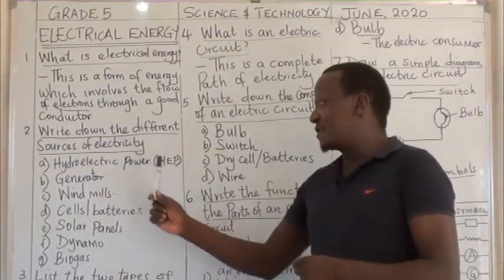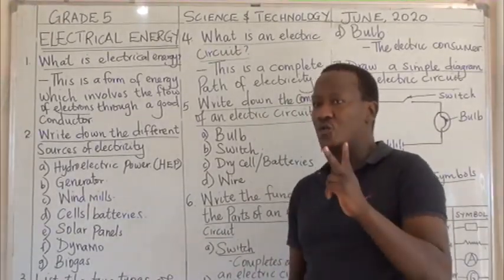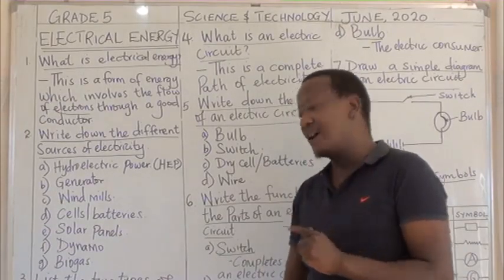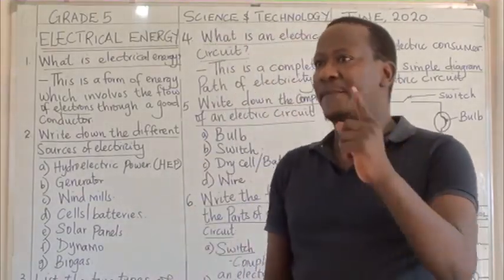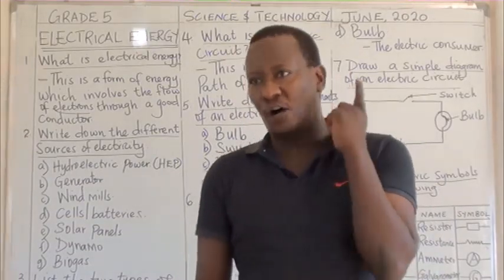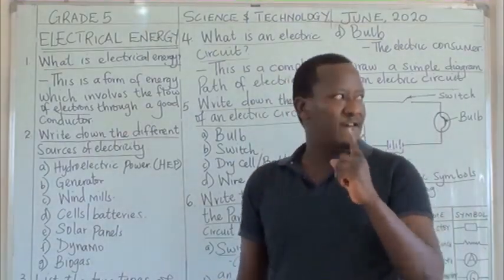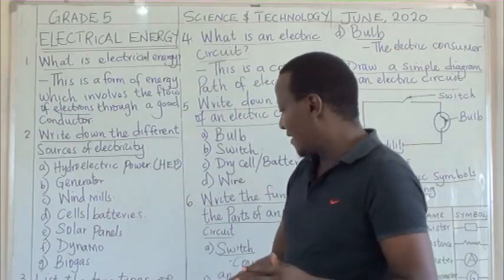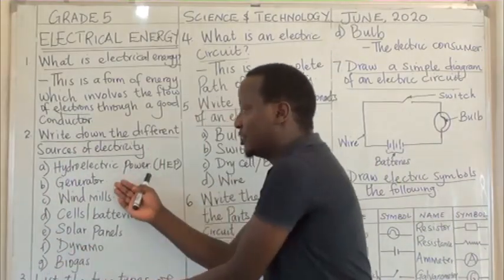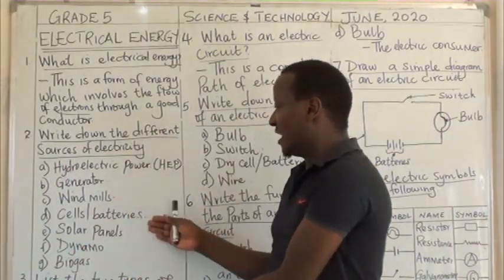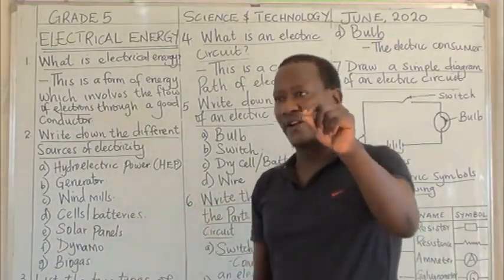Apart from the sources of electricity, we would like now to look at the types of electricity. There are two: current electricity and static electricity. Current electricity is a type of electricity which allows the flow of electricity. The sources mentioned — hydroelectric power, generators, windmills, batteries, solar panels, dynamo — all generate what we call current electricity.